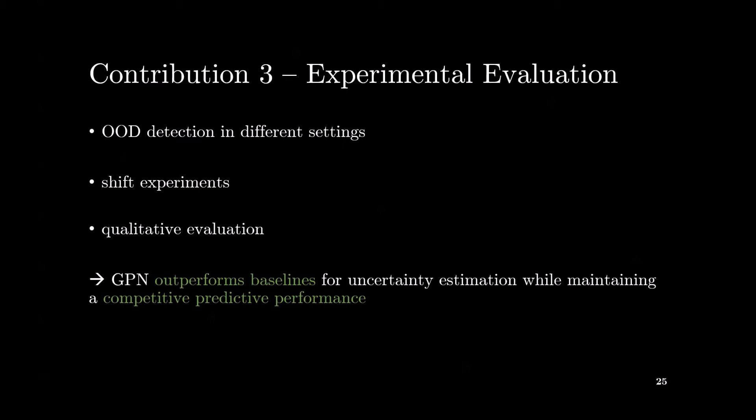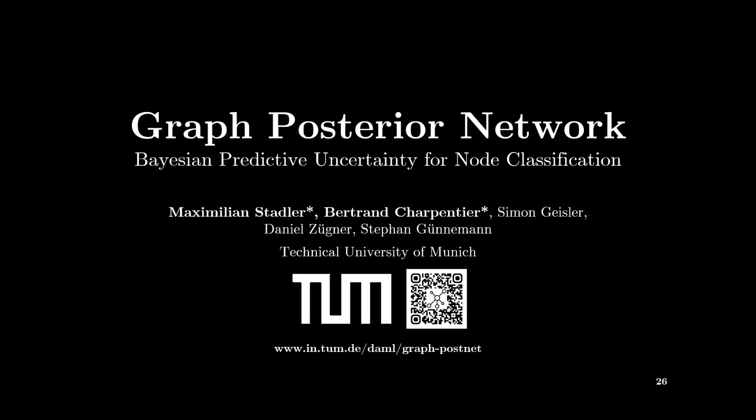As a third contribution, we evaluate our approach and several baselines extensively on different datasets across different tasks. This includes the task of OOD detection in different settings, shift experiments which evaluate robustness and the behavior of uncertainty estimates under different kinds of perturbations, and qualitative evaluations. Overall, we proposed a new approach that outperforms baselines for uncertainty estimation while maintaining a competitive predictive performance. Moreover, GPN fulfills axiomatic considerations unlike other baselines. My name is Maximilian Stadler and this was a short overview of our work on graph posterior network. Bertrand Japentier will now continue with a more detailed presentation of our findings.